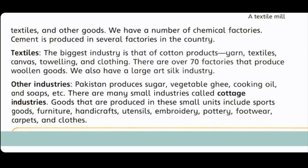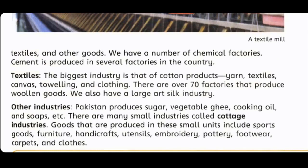Other industries - Pakistan produces sugar, vegetable ghee, cooking oil and soap. There are many small industries called cottage industries. Goods produced in these small units include sports goods, furniture, handicrafts, utensils, embroidery, pottery, footwear, carpets and clothes. پاکستان چینی، vegetable oil، cooking oil اور صابون تیار کرتا ہے اور cottage industries میں مٹی کے برتن، embroidery، carpet اور کپڑے شامل ہیں۔